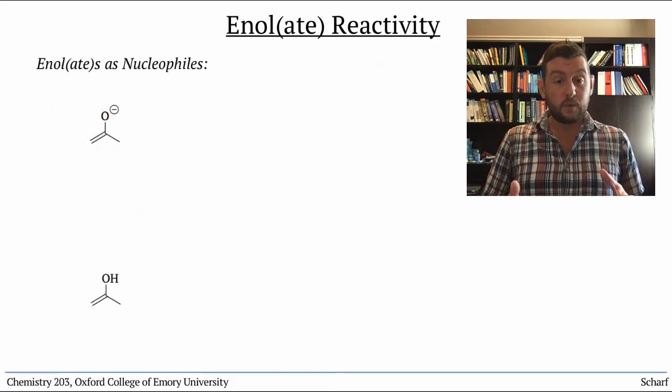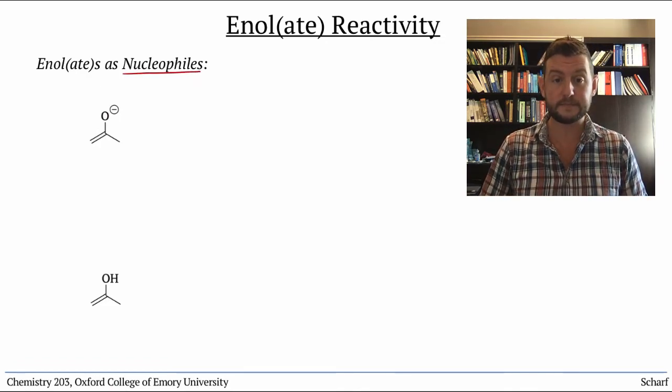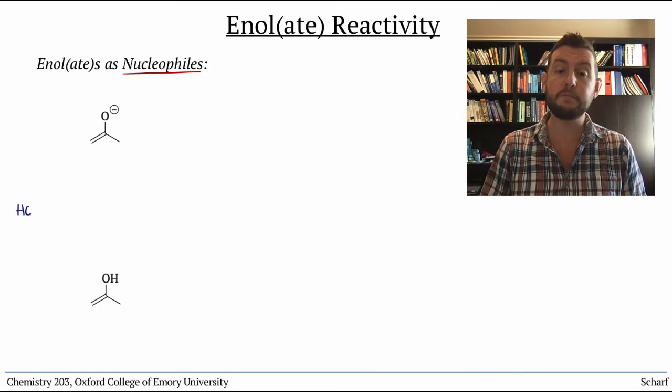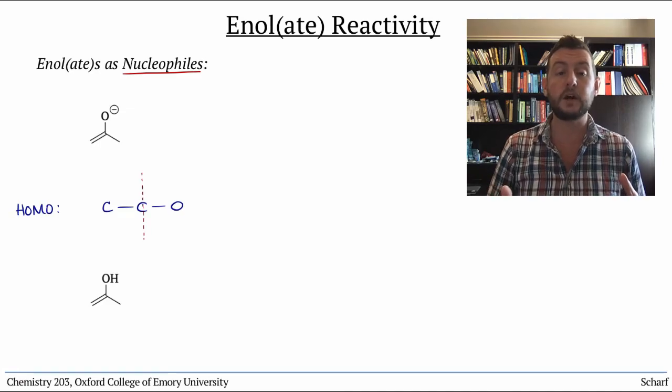Once formed, enols and enolates are both nucleophiles. The HOMOs of both conjugated systems look similar, a node through the central carbon, which used to be the carbonyl carbon, and lobes on the alpha carbon and oxygen.